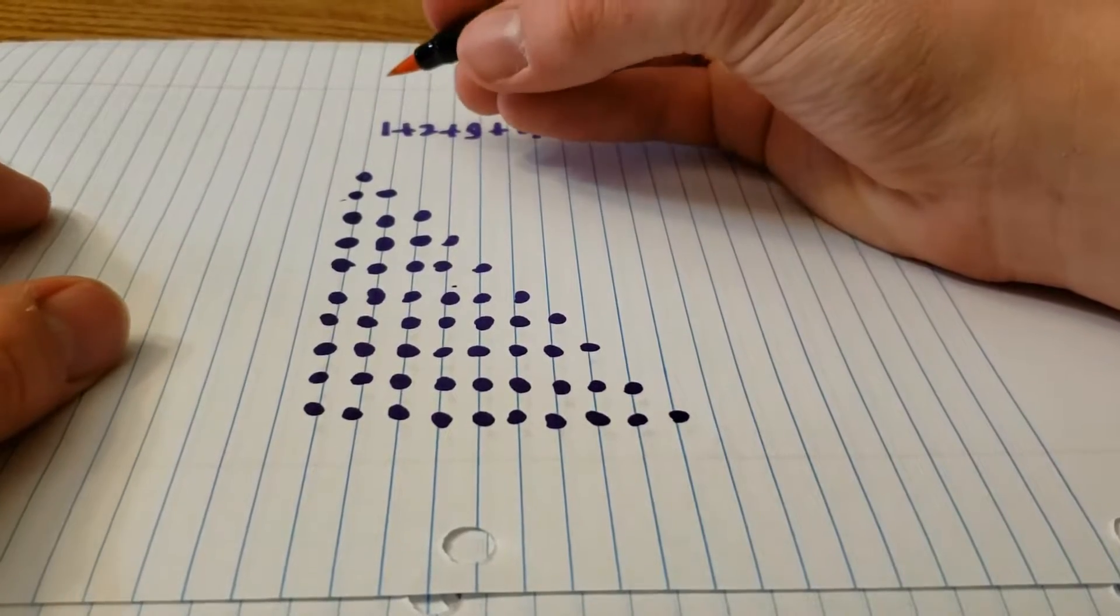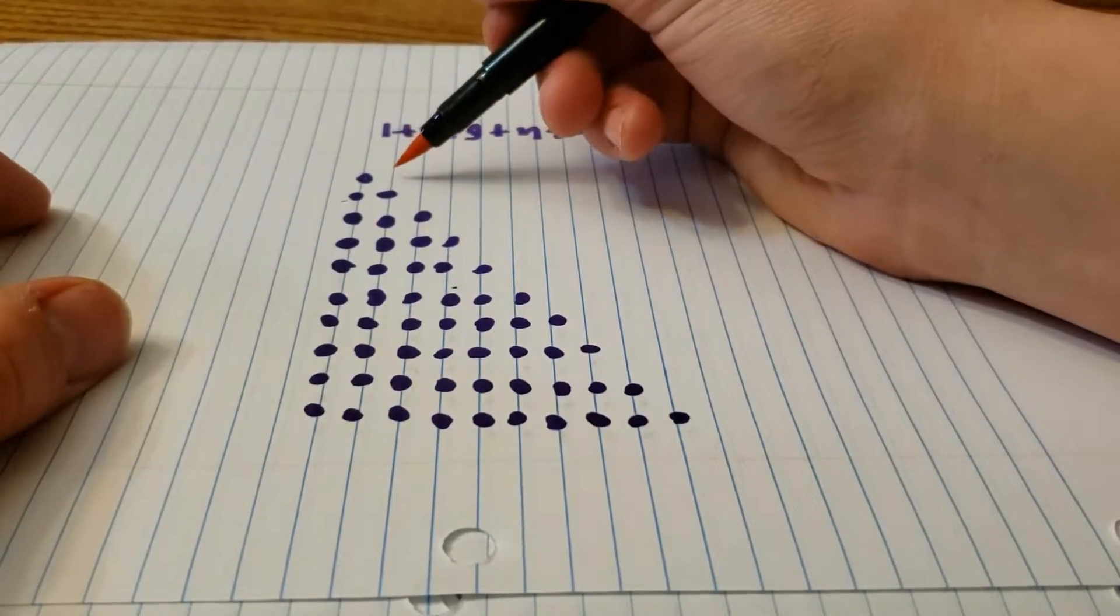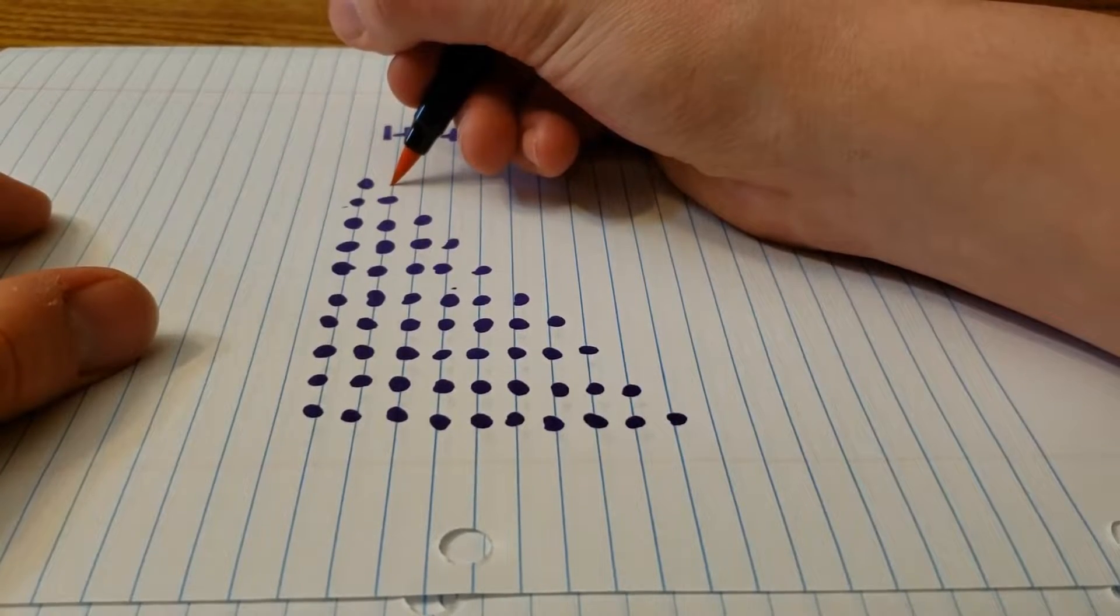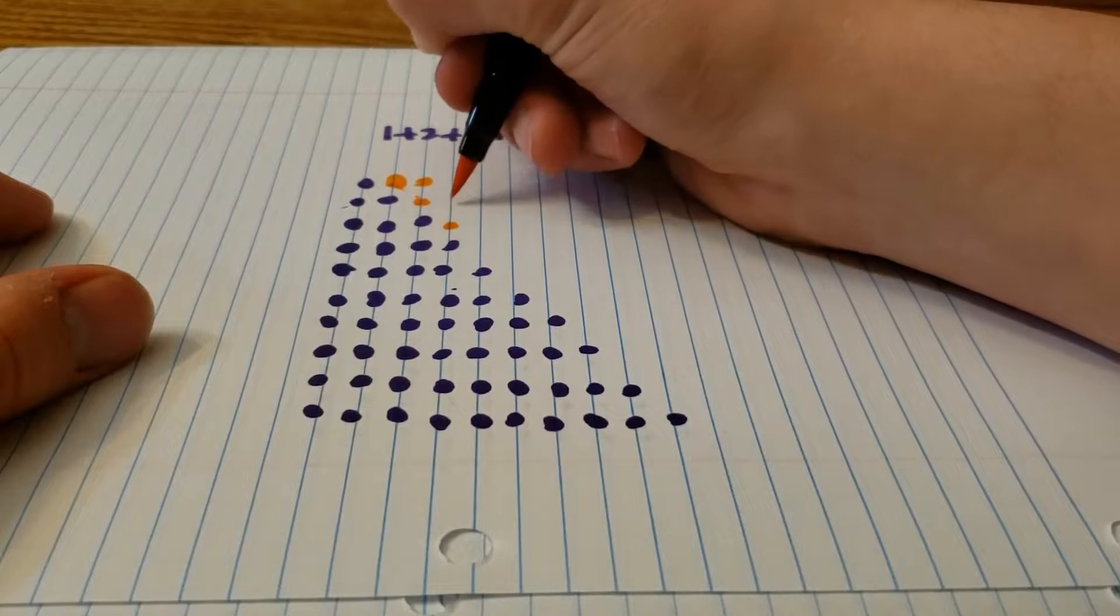We're going to find the area of that rectangle, so there's 1, 2, 3, 4, 5, 6, 7, 8, 9, 10 dots on the horizontal side, and 1, 2, 3, 4, 5, 6, 7, 8, 9, 10, 11 dots on the vertical side. And the area is 110.